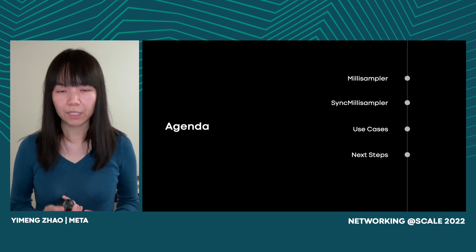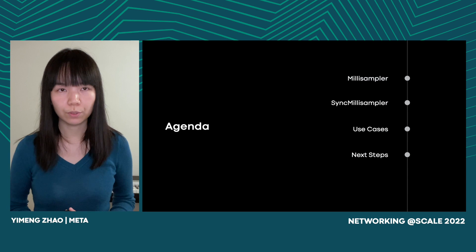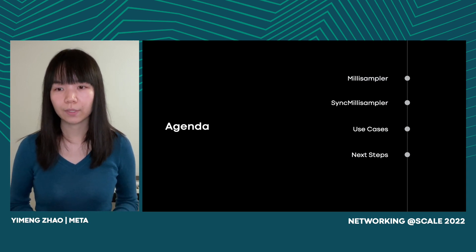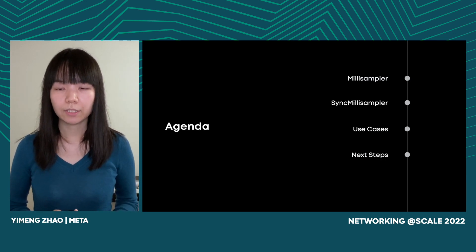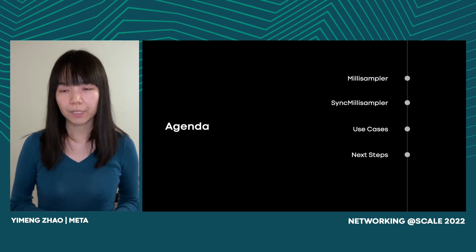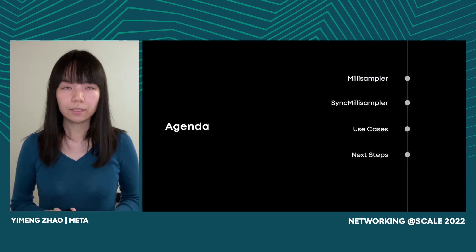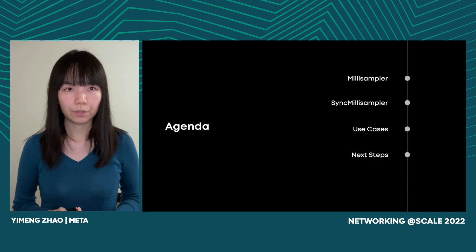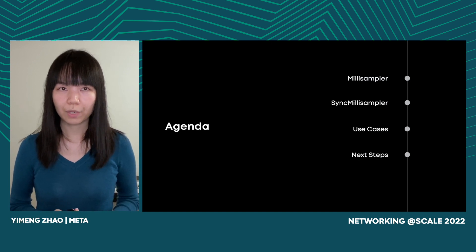Hopefully I've convinced you that it would be very helpful to have a monitoring tool able to get traffic dynamics at fine granularity — at the millisecond level or even at the microsecond level. Next I'll cover how we designed MiniSampler and its extension, Sync MiniSampler, to synchronize collected data across hosts on the same rack. Then I'll talk about two use cases of the MiniSampler data to investigate real network problems. And finally, I'll touch upon some future work to wrap up the talk.